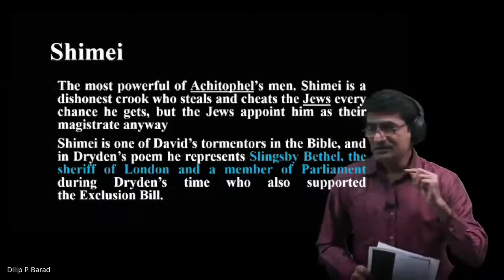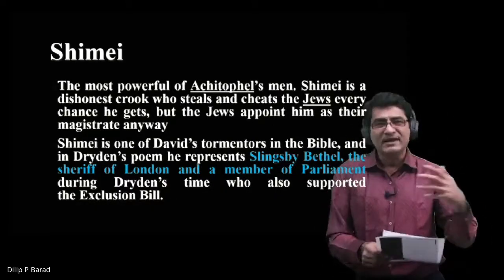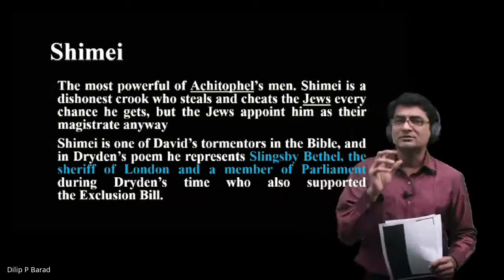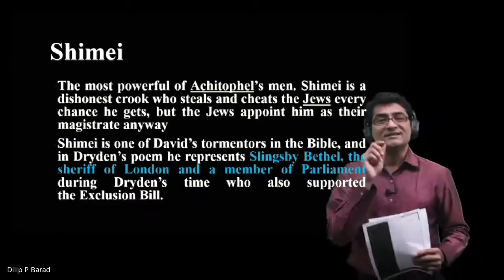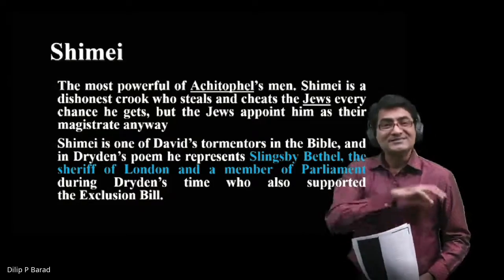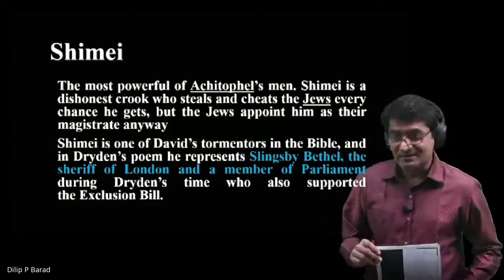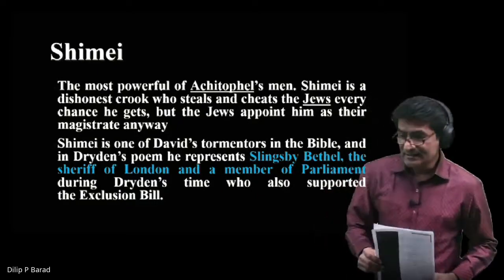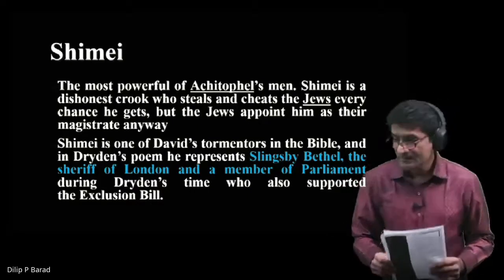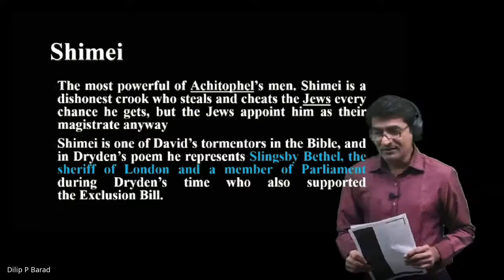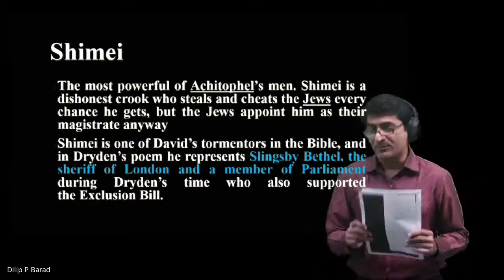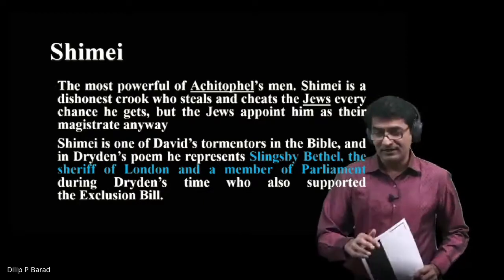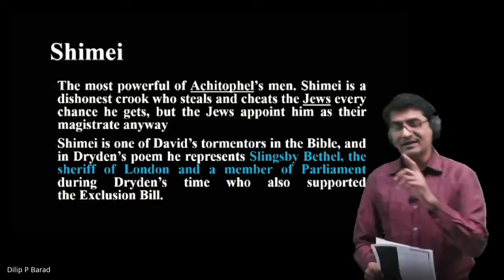In Dryden's poem, Kora represents Titus Oates, the Englishman who engineered the Popish Plot. The next character is Shimei — the most powerful of Achitophel's men. Shimei is a dishonest crook who steals and cheats the Jews every chance he gets, yet the Jews appoint him as their magistrate. In Dryden's poem he represents Slingsby Bethel, the Sheriff of London and a member of parliament during Dryden's time who supported the Exclusion Bill.